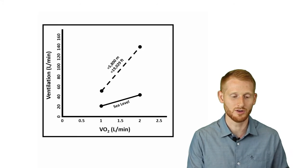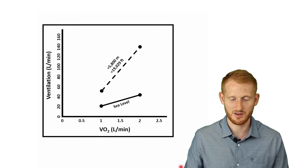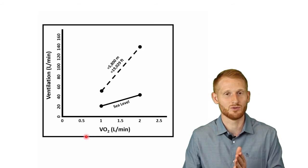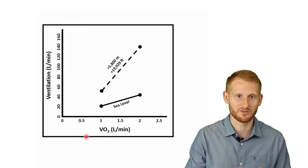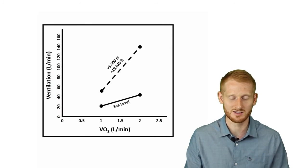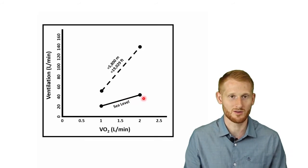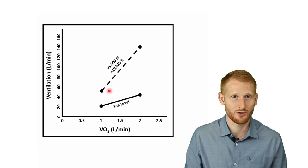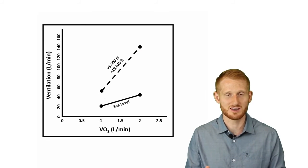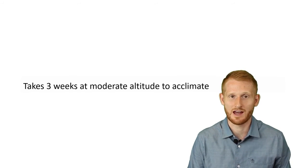What happens to pulmonary ventilation — how much we're breathing in and out — at altitude? Looking at the graph with increasing oxygen consumption (VO2) on the x-axis and ventilation in liters per minute on the y-axis, at sea level ventilation increases with exercise intensity as expected. This increase is much more dramatic at high altitude. The harder you work at altitude, the far greater the ventilatory response compared to sea level.